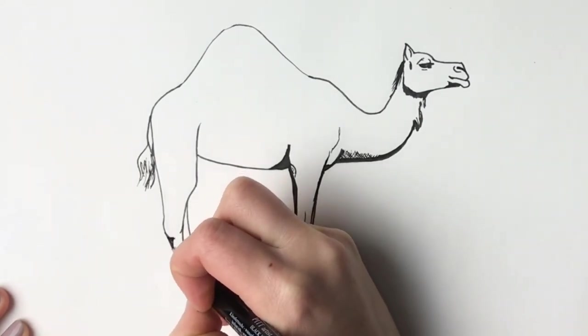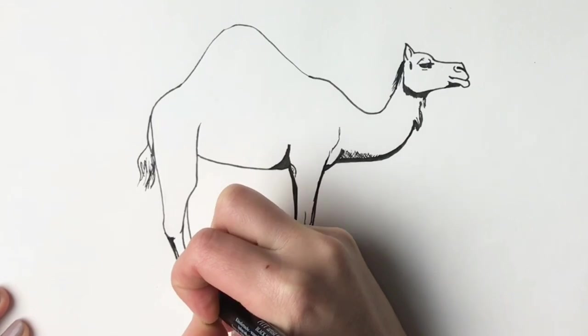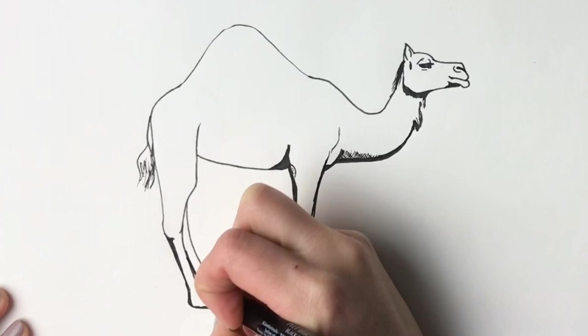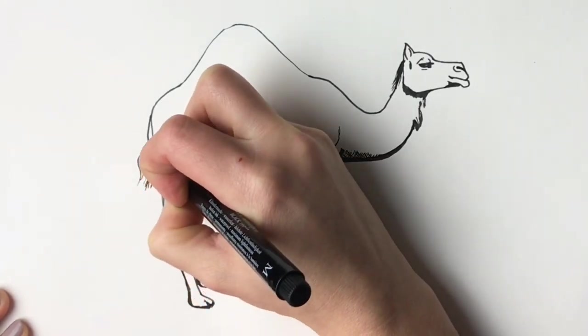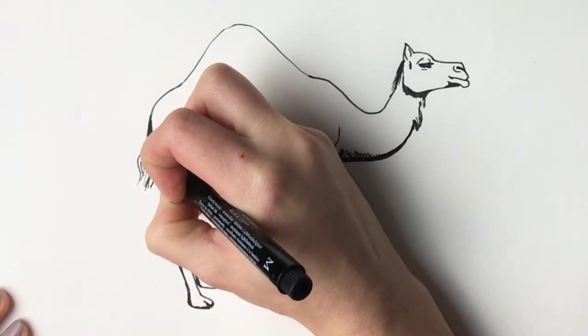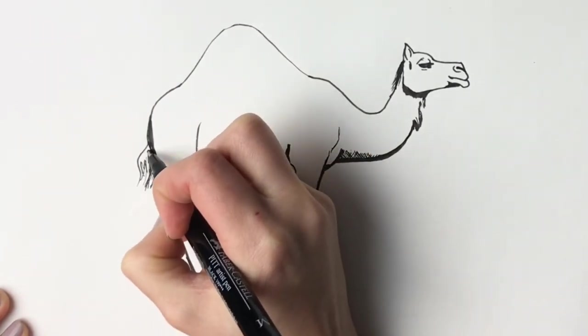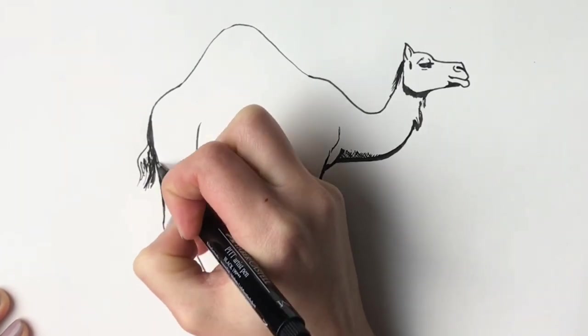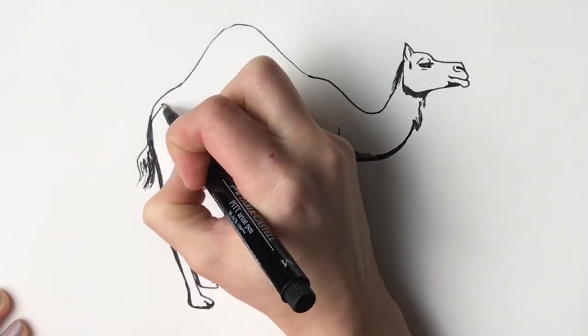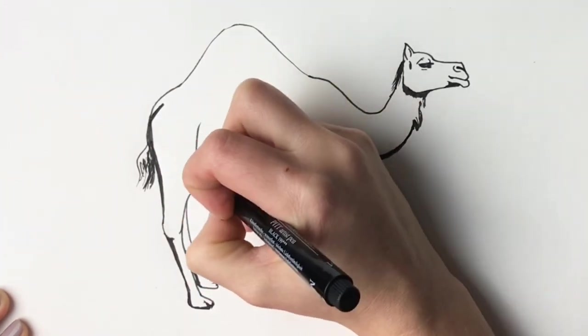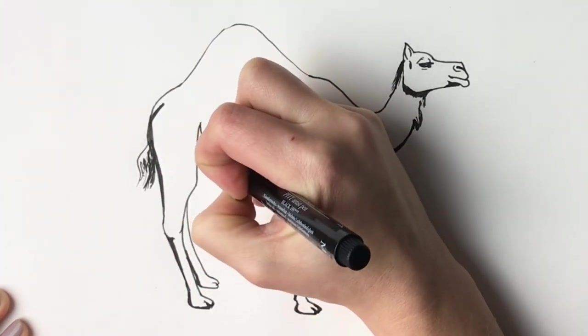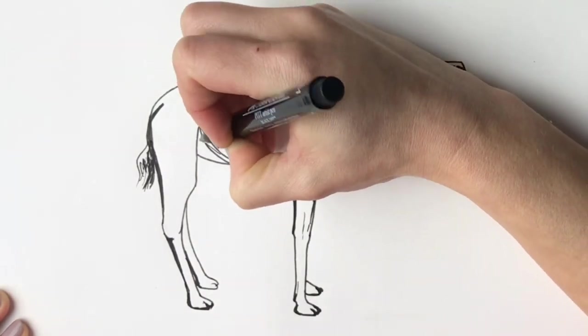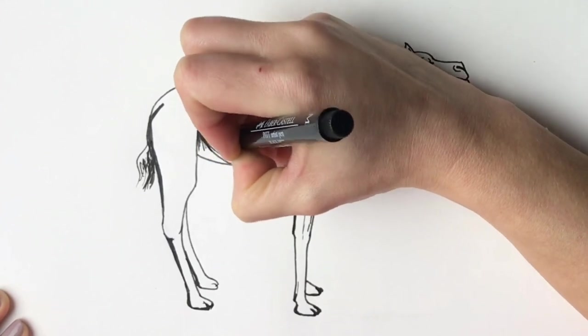And the same here. Underneath this back knee. There we go. And then around behind here. Then around the back. Underneath the tail. And then definitely underneath the tummy here. Quite a big shadow actually. So let's make that bigger. And just color it in.